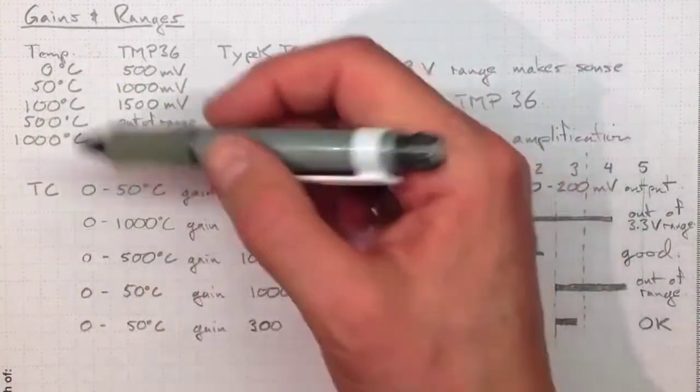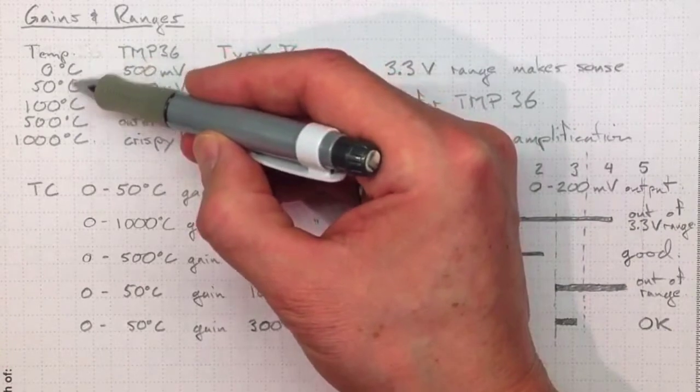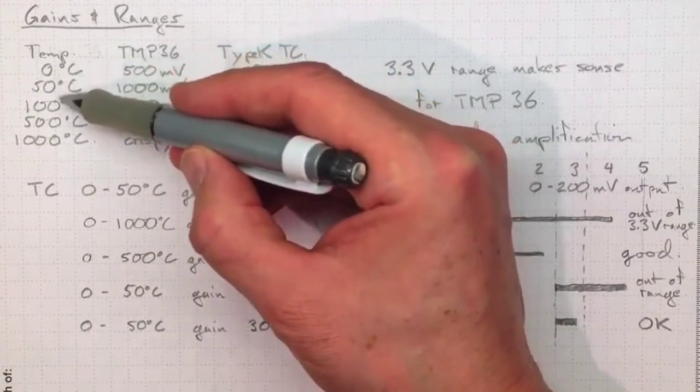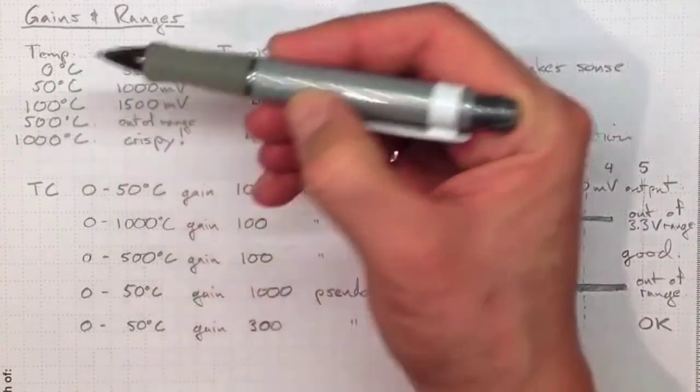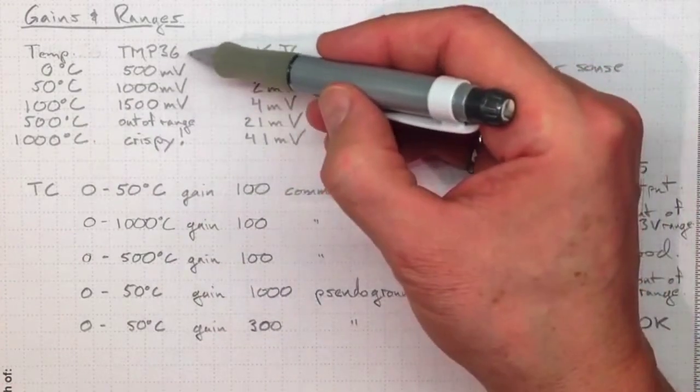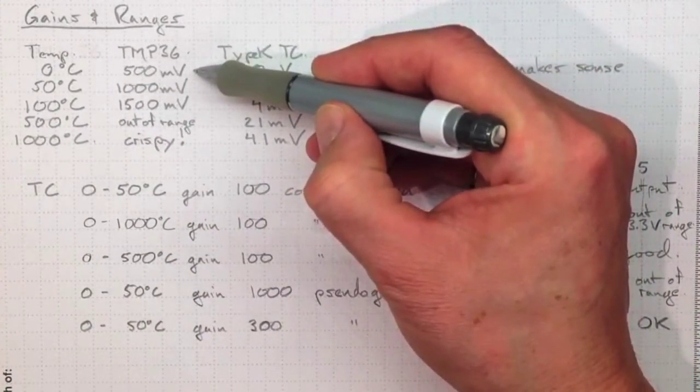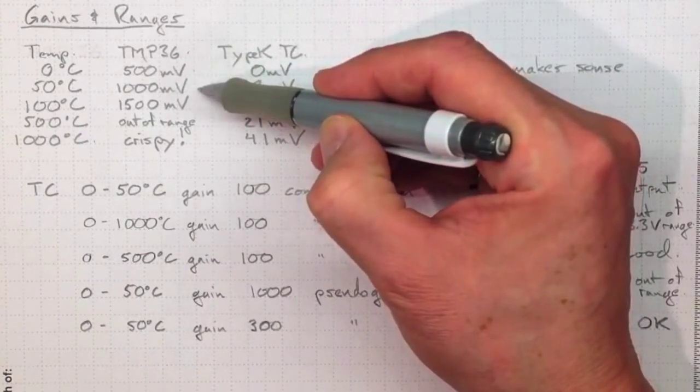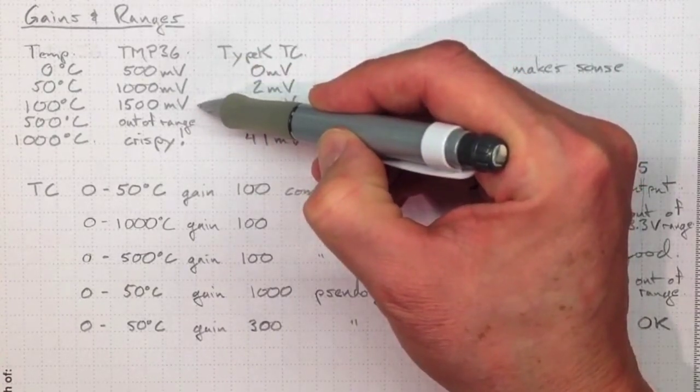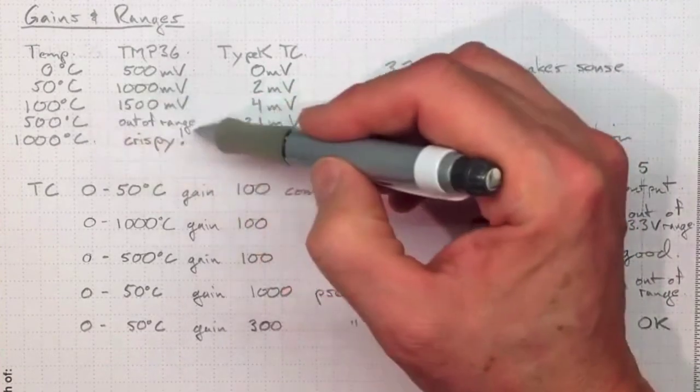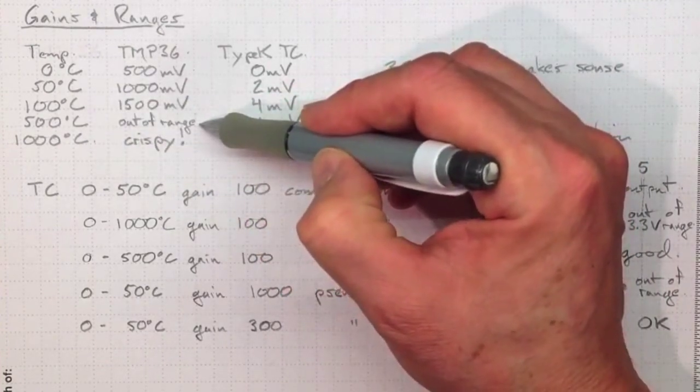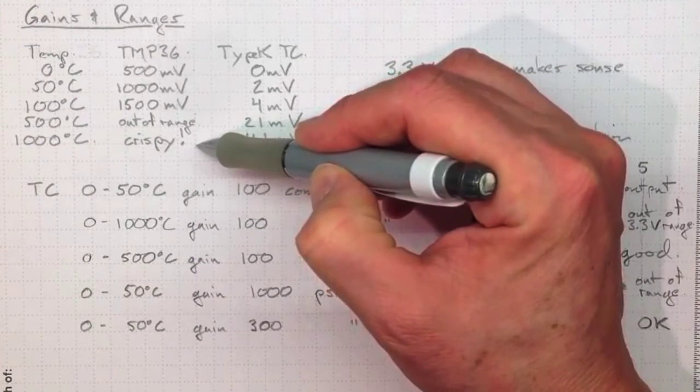For example, when measuring temperature, we could be going over a relatively small temperature range or maybe a large range up to a thousand degrees Celsius. The TMP-36 gives us 500 millivolts output at 0 degrees C, 1 volt at 50 degrees, and 1500 millivolts at 100 degrees C. By 500 it's out of range and by a thousand it's quite crispy.